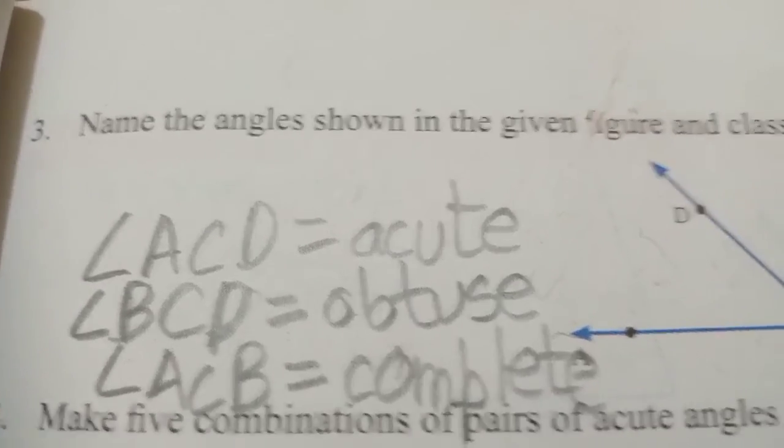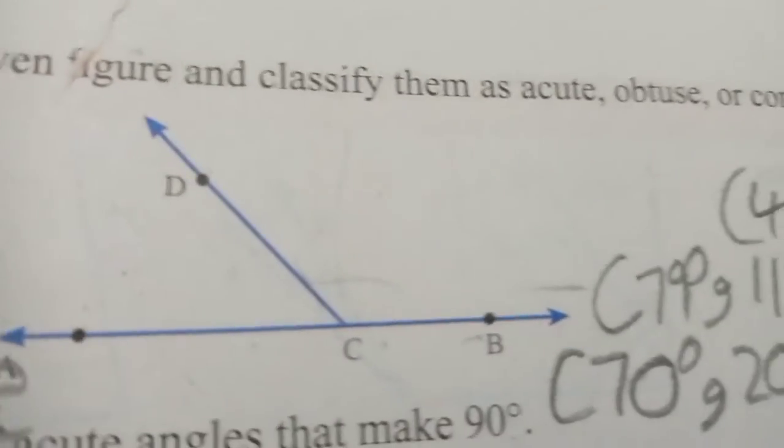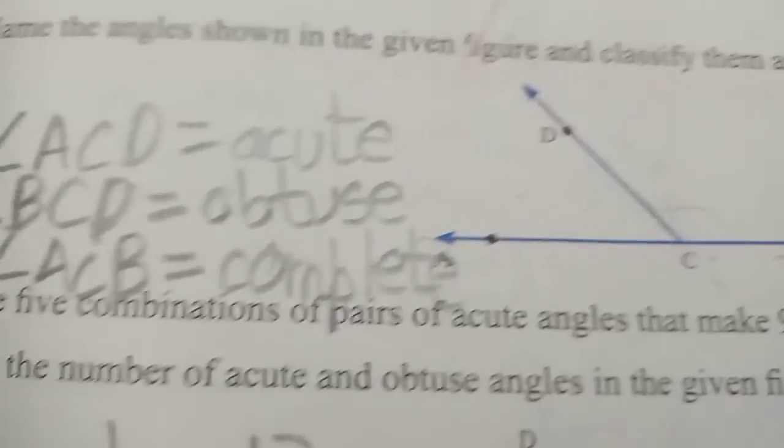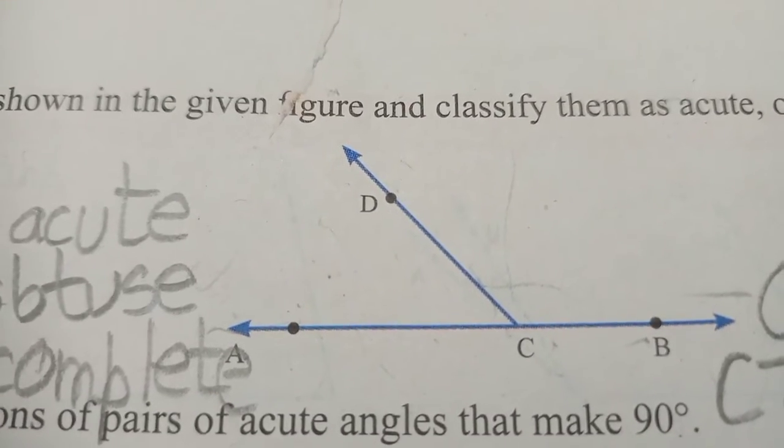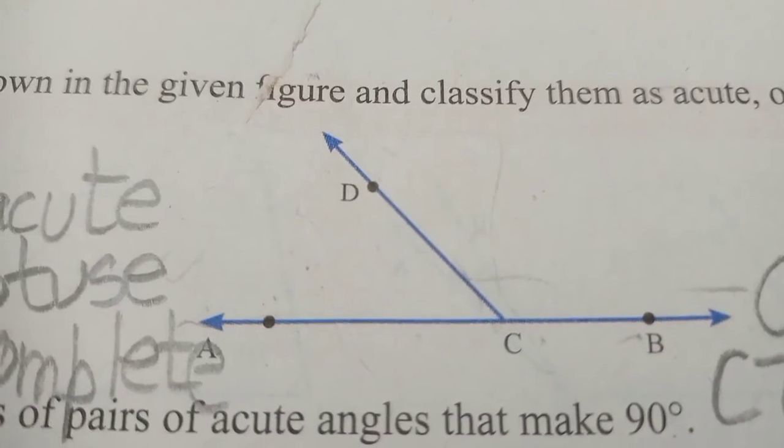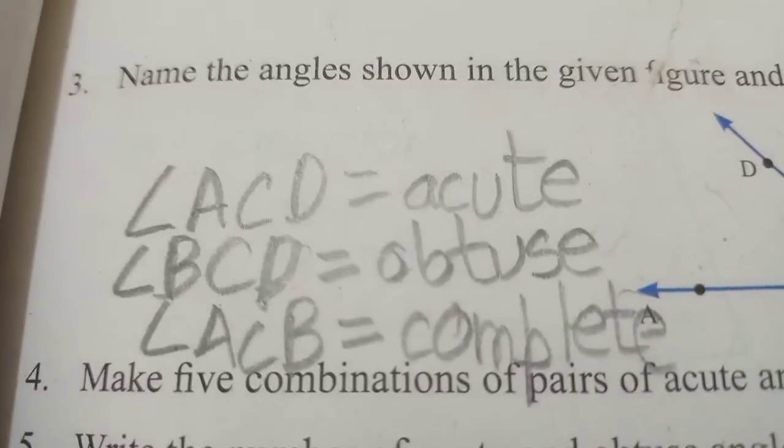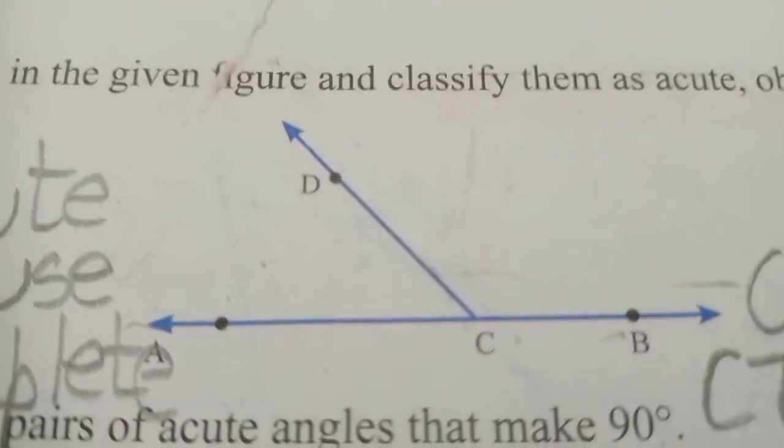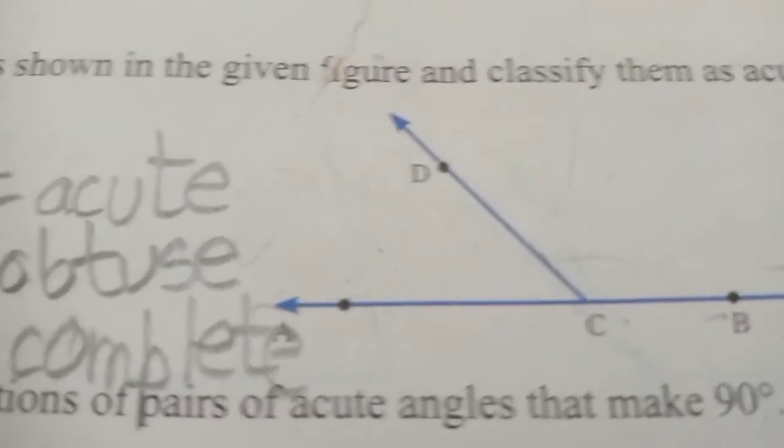Now friends, third question: name the angle shown in the figure and classify them as acute, obtuse, or complete. Angle ACD is an obtuse angle. Angle ACB is a straight line, which is a complete angle.